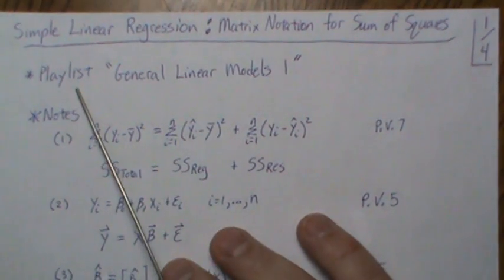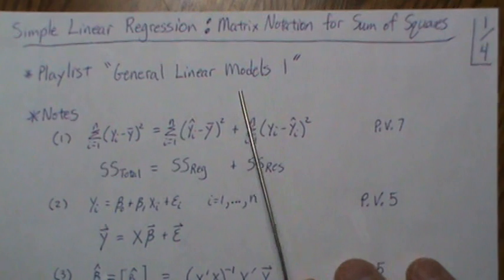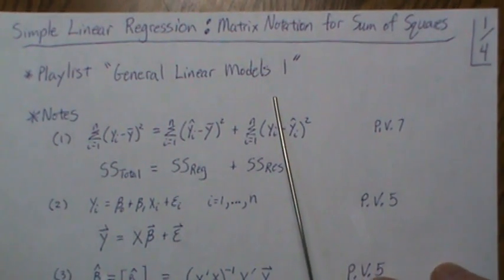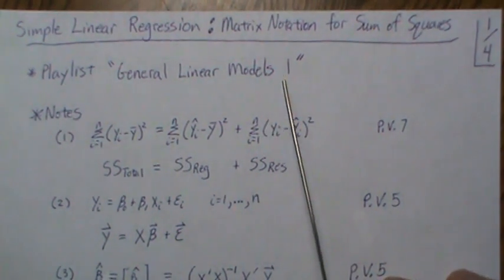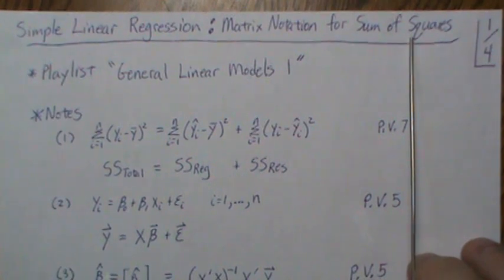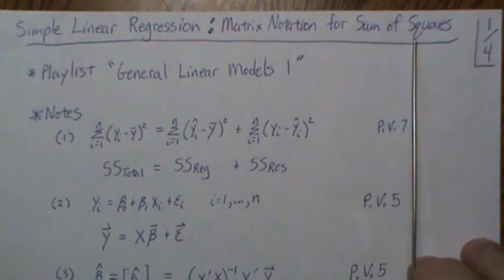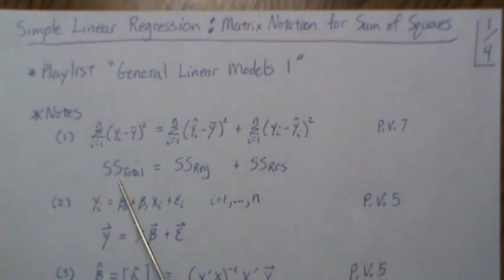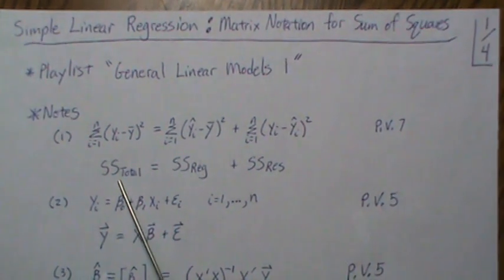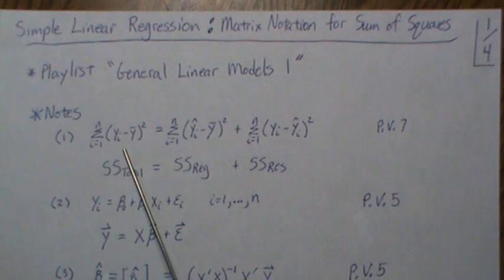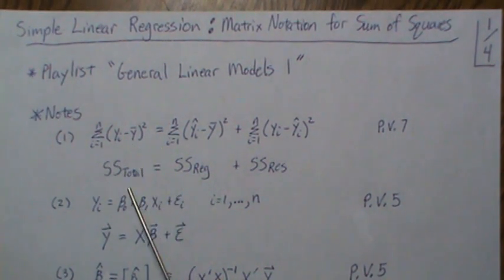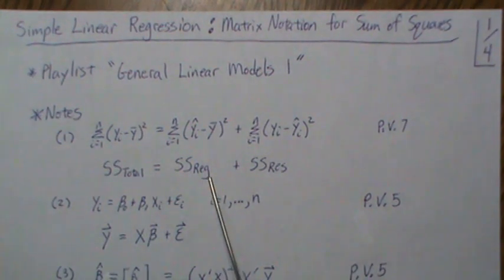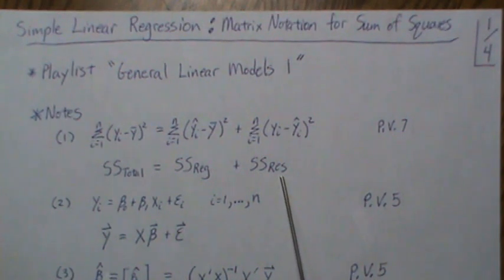Welcome to the next video in my playlist, which I'm calling General Linear Models 1. In this video we take the sum of squares that we developed in the preceding video and we put it in matrix notation. We partitioned the total sum of squares — the total variability — into variability associated with the regression line and variability associated with the residual.